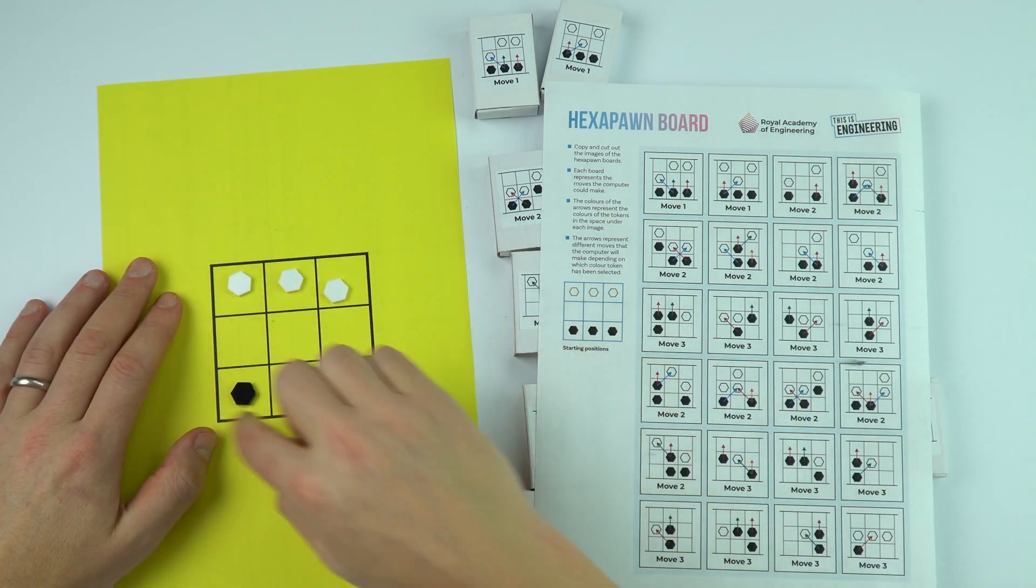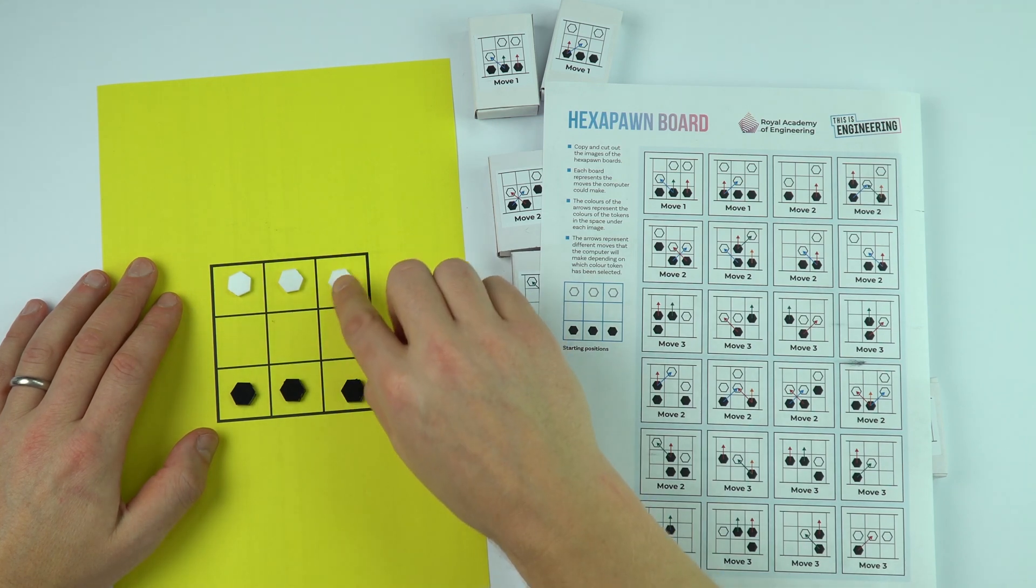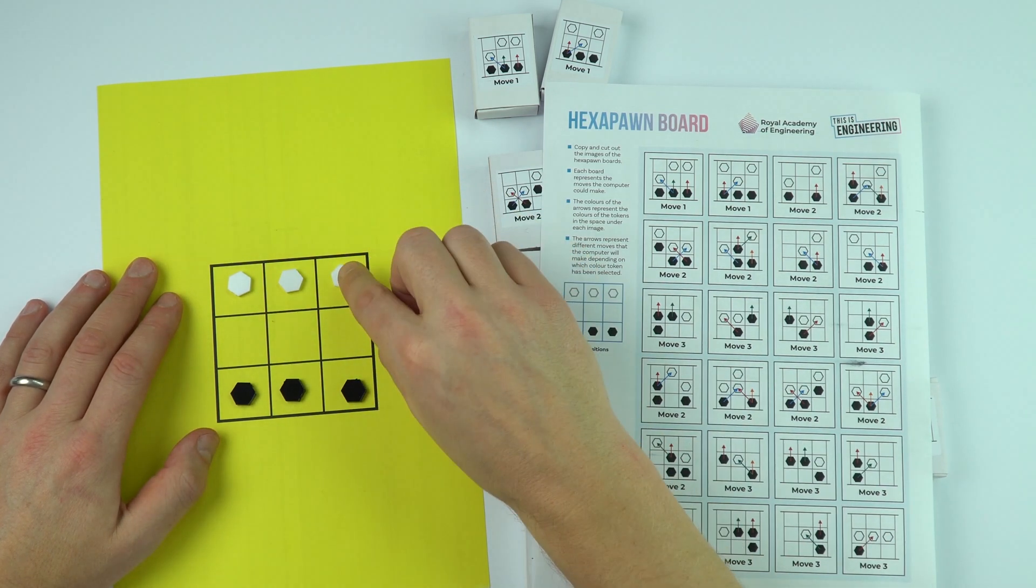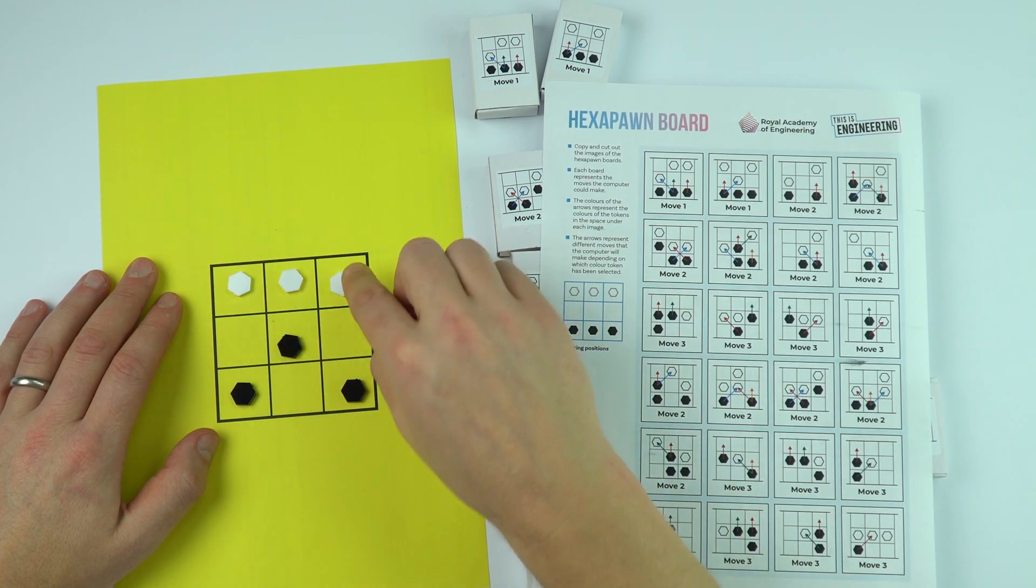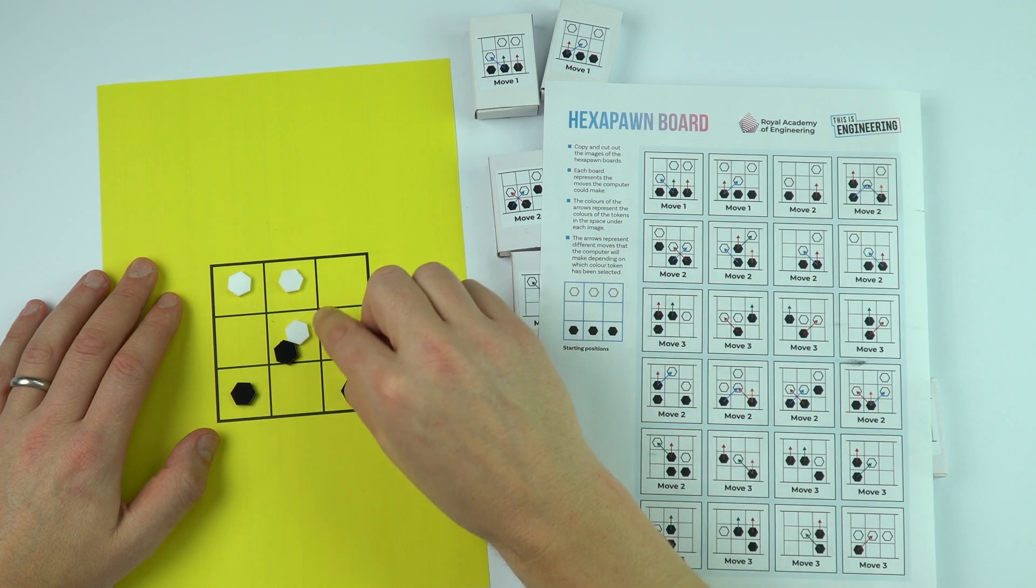We've got a three by three grid. You're going to be the white player and these are the pawns. Just like in chess, the pawns can either move forward one space or they can move diagonally if they're taking another piece.